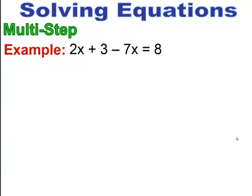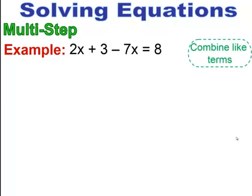Here's an example. It's a multi-step equation — I have multiple of the same variables, and I need to get them together before I can start moving. The first thing I want to do is combine like terms, because the variables are on the same side of the equal sign. I have 2 minus 7, which gives me negative 5, so I end up with negative 5x plus 3 equals 8.